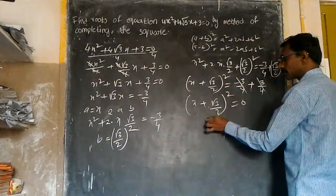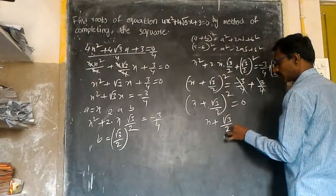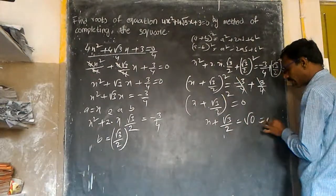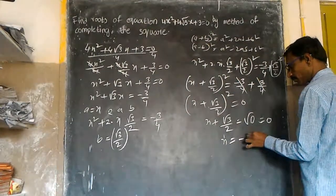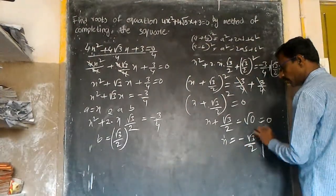Taking the square root of both sides, square root of 0 is 0, so x + √3/2 = 0. Therefore x = -√3/2.